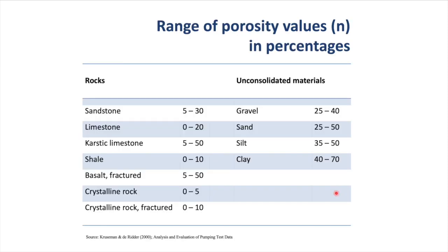Here are some examples of porosity values from Kruseman and de Ridder. Notice that the highest porosities are found in unconsolidated materials, like gravel, sand, and silts. But mostly the porosity is under 50%, with the exception of clay, where it can be a little bit higher.